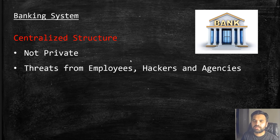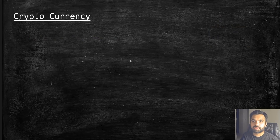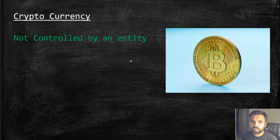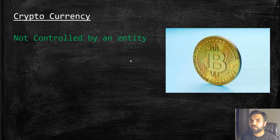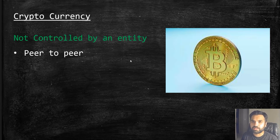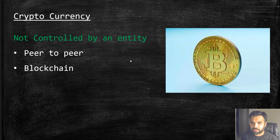There are some disadvantages to the banking system, and that's why cryptocurrency was invented. Cryptocurrency is not controlled by any entity — there is no government or private entity that owns it, so there is no centralization. It is peer-to-peer, so if I want to send money to you, I can directly transact with you. It removes the middleman, removes transaction and service fees, making it much easier to transact. For this, it uses blockchain technology.